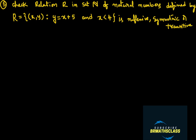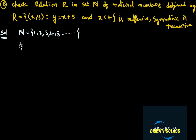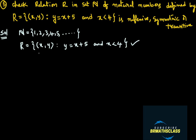First, we will try to understand what the given relation is. The given relation is the set of all ordered pairs such that y equals x plus 5. This relation is defined on the set of all natural numbers: 1, 2, 3, 4, 5, and so on. R contains ordered pair (x, y) such that y equals x plus 5, and importantly, x is less than 4. This relation is given in set-builder method. If we write this relation in roster method, we can easily identify whether it is reflexive, symmetric, or transitive.